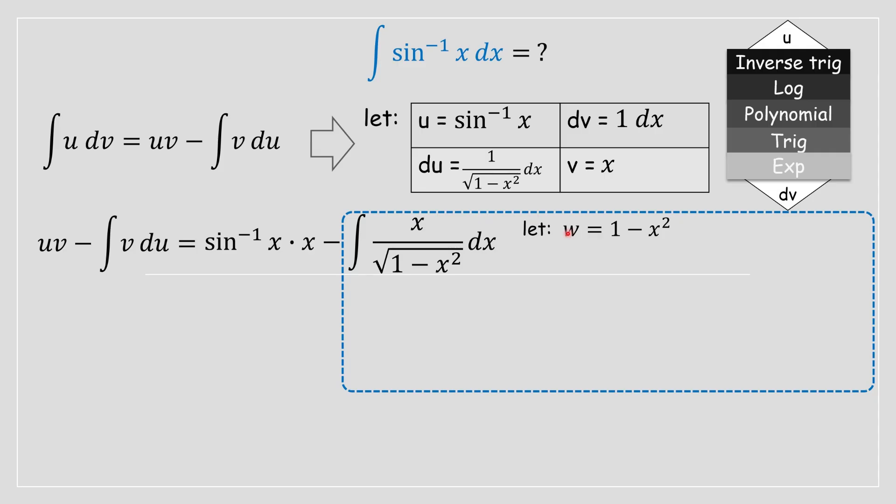We're going to say that the substitution variable w is equal to 1 minus x squared. Therefore dw is equal to negative 2x dx once you take a derivative of this, and we are writing in terms of dx as shown on your screen.